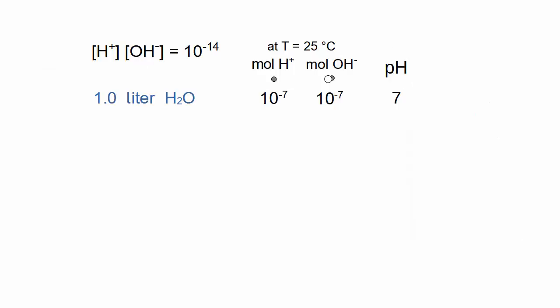One liter of pure water has 10 to the minus 7 mole of H-plus ions and an equal number of OH-minus ions, and the pH is 7.